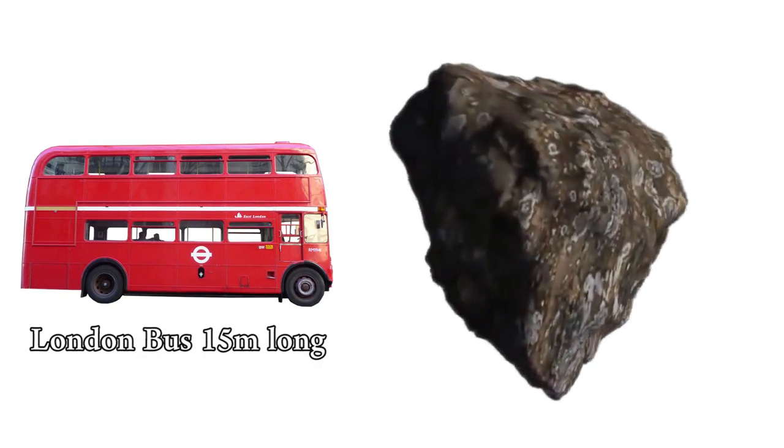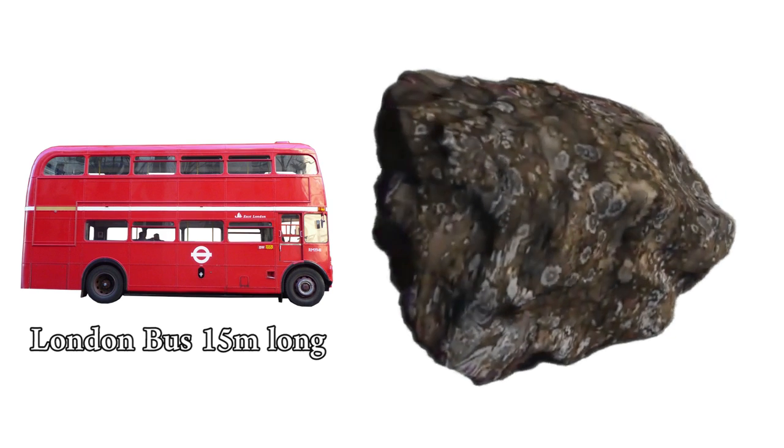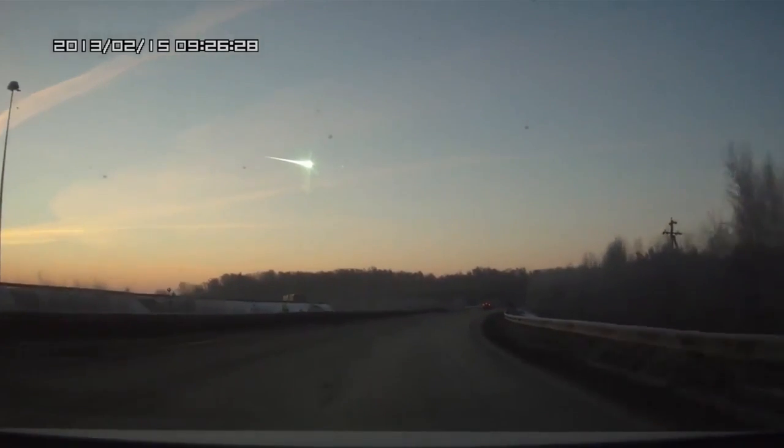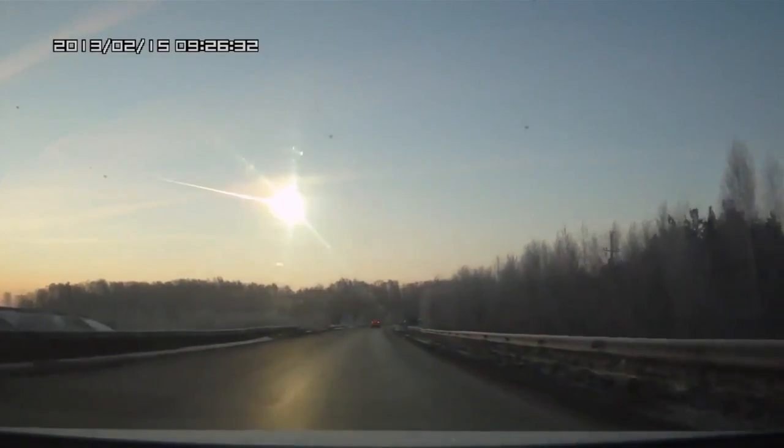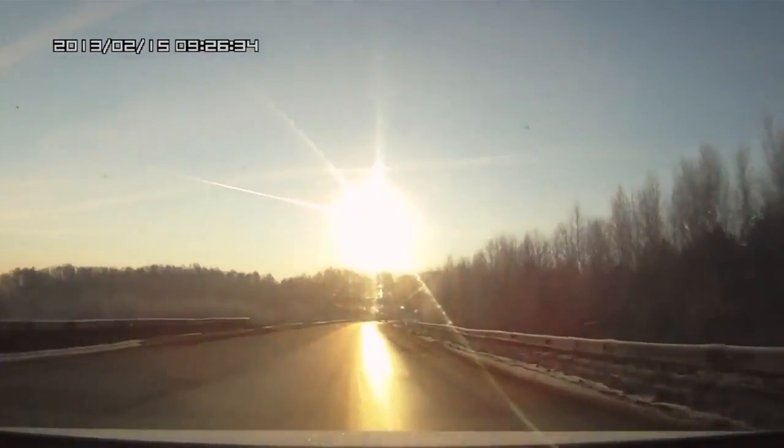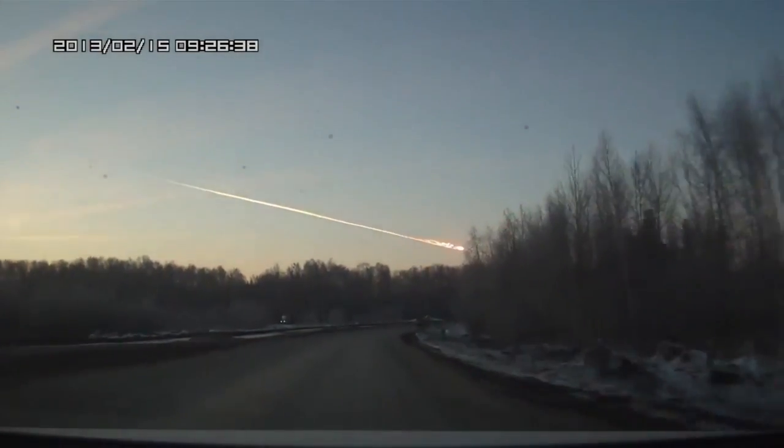The Chelyabinsk asteroid which came to us completely out of the blue was only about 20 meters across. It exploded at a height of 100,000 feet with the force of 500,000 tons of TNT, about 29 times that of the Hiroshima bomb.